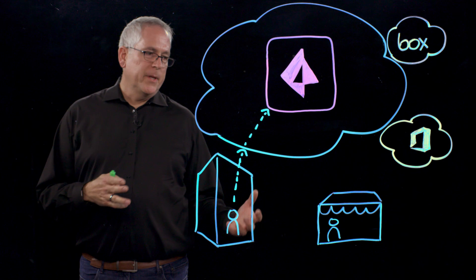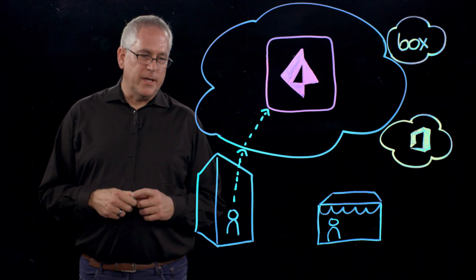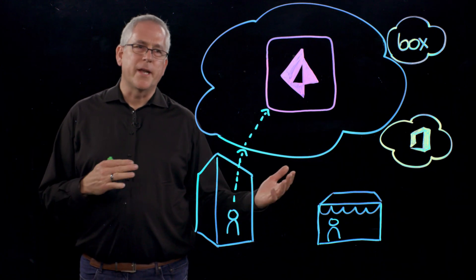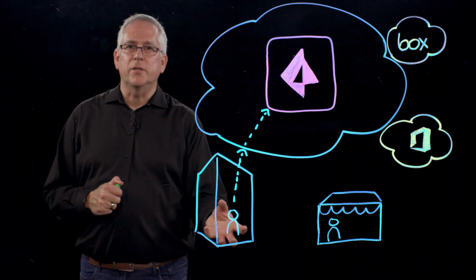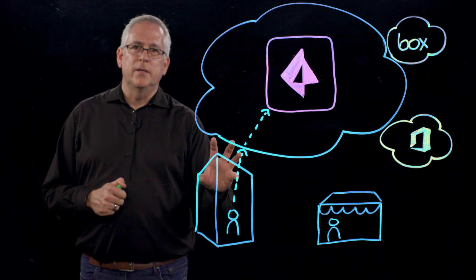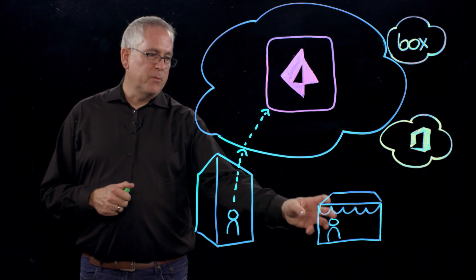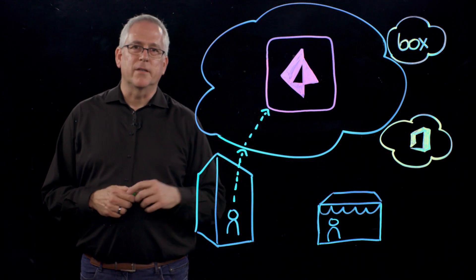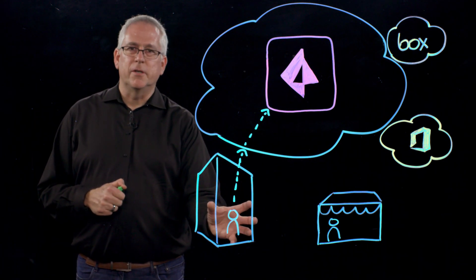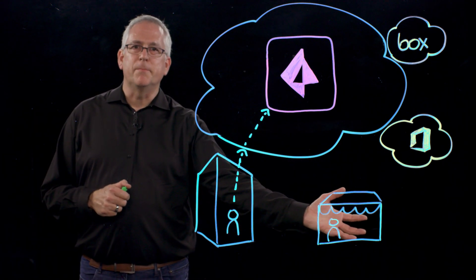So in this example, a company has purchased Prisma Access and they have a couple employees that are going to connect to Office 365. We have a user here at a branch location and that branch office has been onboarded to the service and another employee is at a coffee shop using the mobile agent to also connect to the service. It could be this user is in Italy and let's say this user is in Spain.